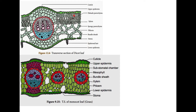The palisade parenchyma cells are elongated and densely packed, meaning they have high chlorophyll content. The spongy parenchyma cells are irregular in shape — they can be oval, spherical, or any shape — and they have comparatively fewer chlorophyll pigments as compared to the palisade parenchyma.